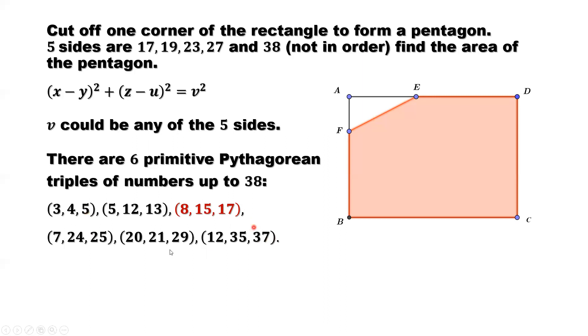So we only have six triples. Now, only one satisfies our condition here. Because this 17 is one of those given five numbers. All others, 37, 29, 25, 13, 5, all are not inside of this given five numbers.